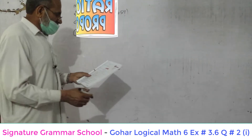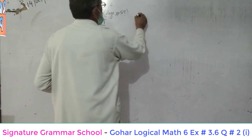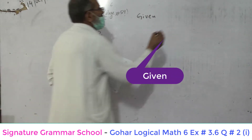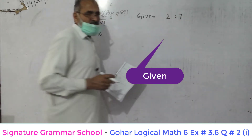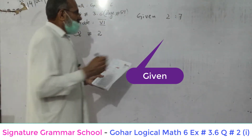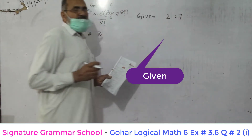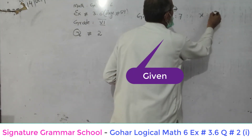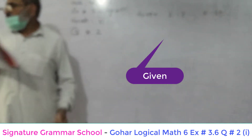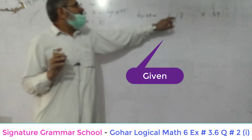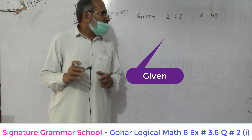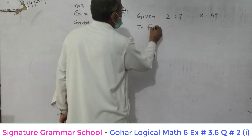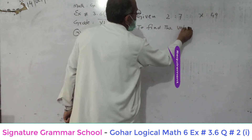As far as the first part of question number 2 is concerned, we have been given. First of all we will write down the value which is given to us in step number 1. Given is 2 — this is known as ratio. 2 ratio 7, and these 4 dots are for proportion. 2 ratio 7, proportion x ratio 49. These two values are given to us, and the requirement is to find the value of x.